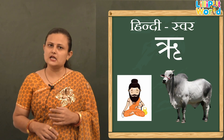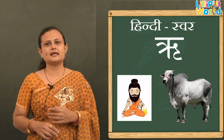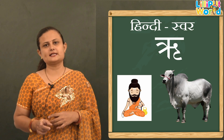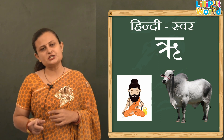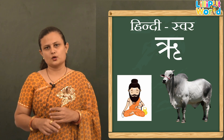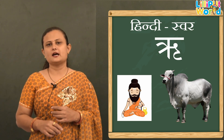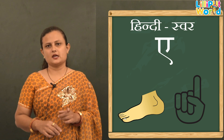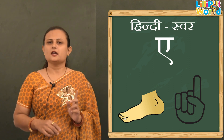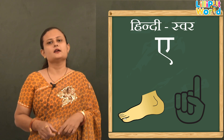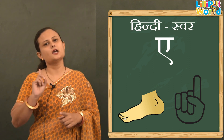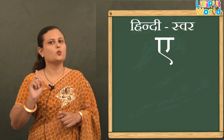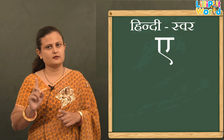Now ऋ — Ri se Rishi, Ri se Rishav. Now ए — E se Eri, E se Ek. Ek means number one.